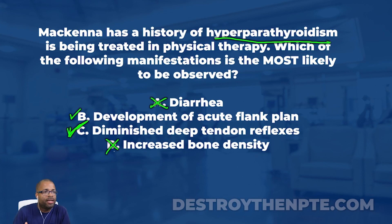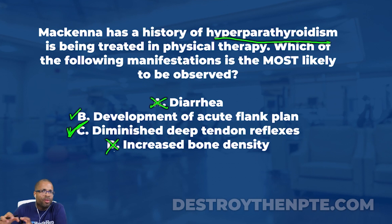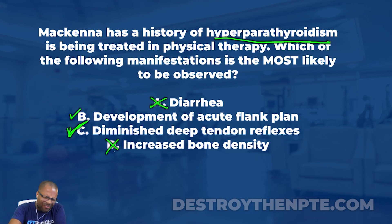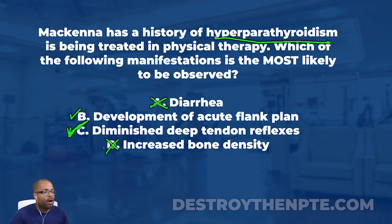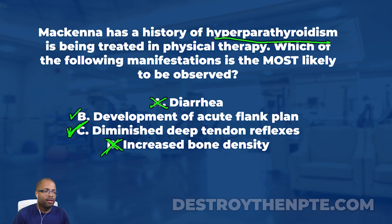I like C way more than B right now. Let's look at D — increased bone density. We can get rid of that one. Why? Because parathyroid hormone increases osteoclastic activity, which breaks down bone and pulls out calcium, making the bones more brittle. The patient is at risk for osteopenia, and if that goes on too long, osteoporosis. So I'd expect decreased bone density, not increased. Big X next to D. So A and D are eliminated.